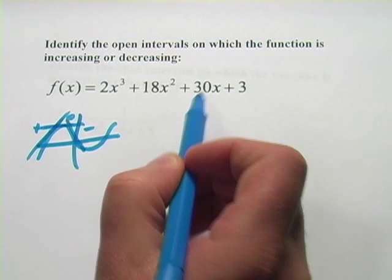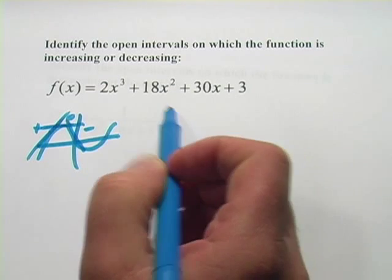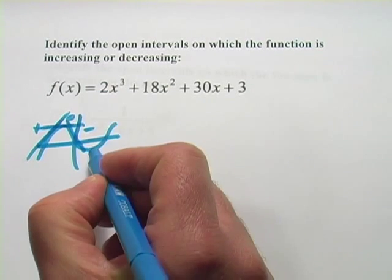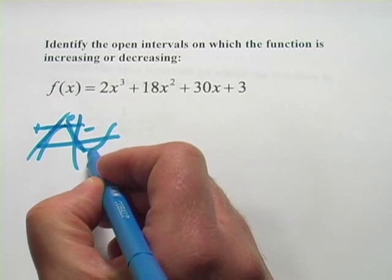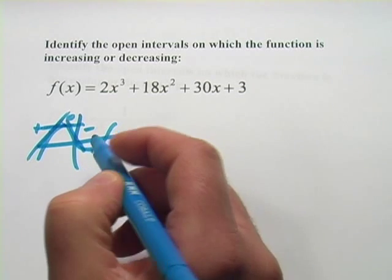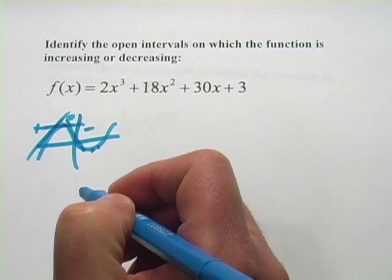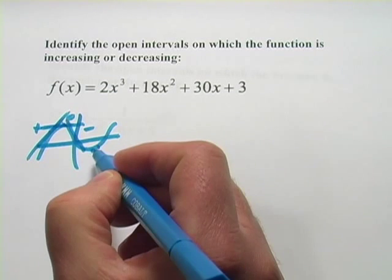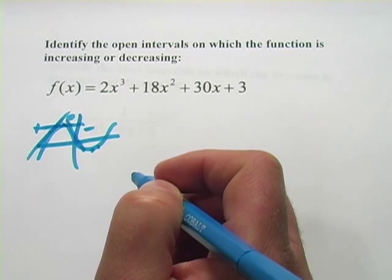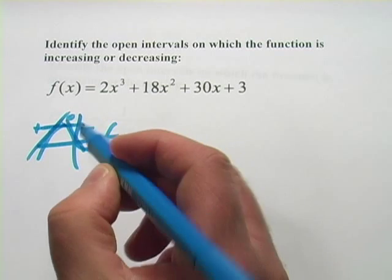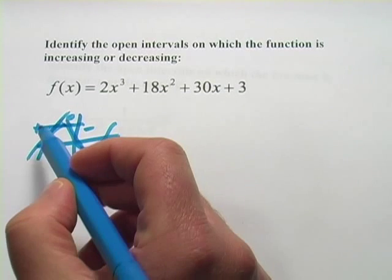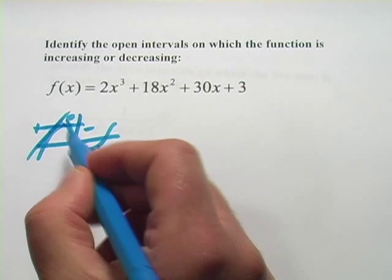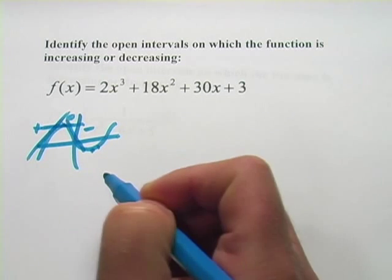So what we want to do in a problem like this is take the derivative of our function, find the zeros, because those are the critical points where it changes, and then we'll test the regions on either side of those relative maxima or minima. And if we test the derivative, if we get a positive value, we know the function's increasing. If we get a negative value, we know the function's decreasing.